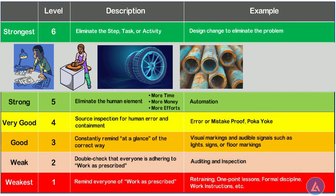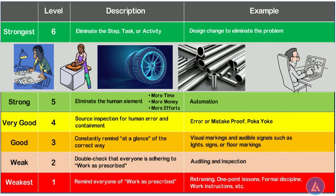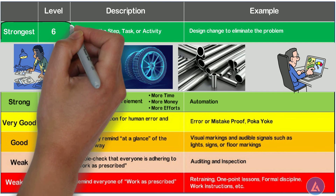Another example is from the chemical industry. In a chemical processing plant, equipment made from steel regularly corrodes due to exposure to harsh chemicals. By redesigning the equipment with corrosion-resistant materials like stainless steel or a specific alloy, the corrosion problem is eliminated, leading to longer equipment life and fewer replacements. This level has the strongest impact on elimination of the problem and is highlighted in dark green in the countermeasure ladder.